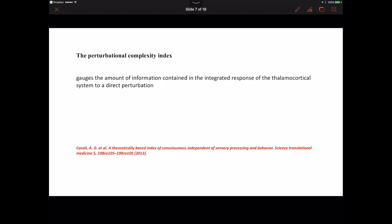Now, I need to introduce you to this particular measure that you encountered a few slides back, which has since been formalized in a mathematical way. It's called the perturbational complexity index. It gauges the amount of information contained in the integrated response of the thalamocortical system to direct perturbation. Now that's a mouthful and I will unpack this for you so you understand what's going on. It's a very important measure that's increasingly being used in the study of patients with apparent loss of consciousness who nevertheless may be aware and may have conscious content.